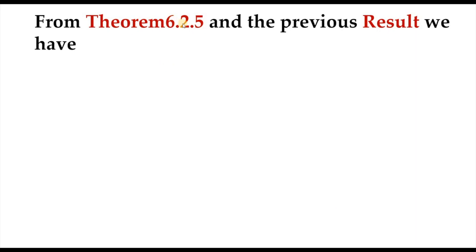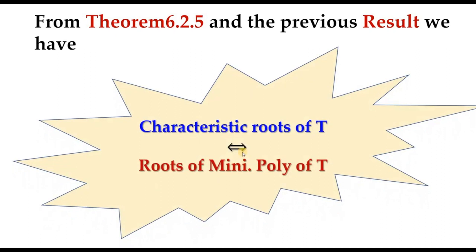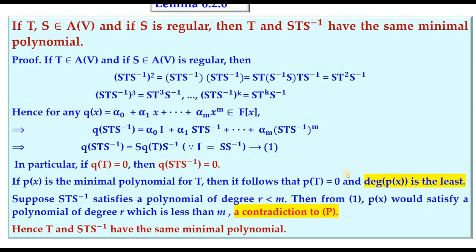So combining theorem 6.2.5 and the previous result: characteristic roots of T are exactly the roots of the minimal polynomial of T, and roots of the minimal polynomial of T are characteristic roots of T.